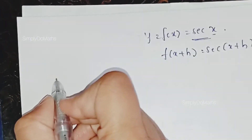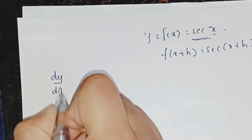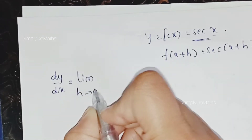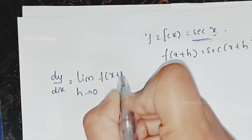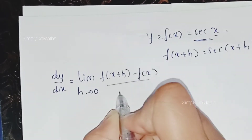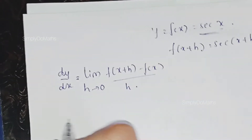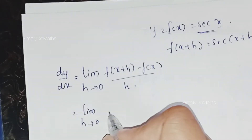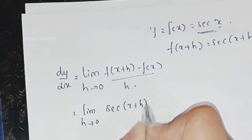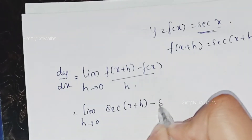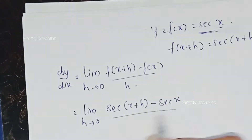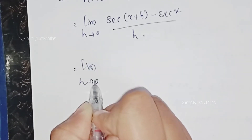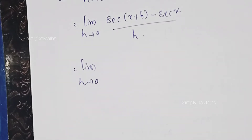Then according to the first principal method, dy by dx equals the limit as h tending to 0 of f of x plus h minus f of x, divided by h. Substituting the values: limit as h tending to 0 of secant of x plus h minus secant x, divided by h.